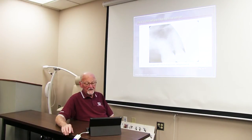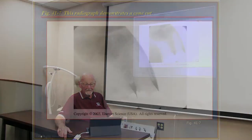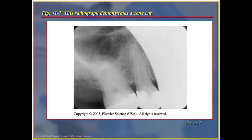This deviation is called a cone cut. In this situation the film or sensor has not been bisected by the ray of the x-ray machine and part of the film has not been exposed to radiation.